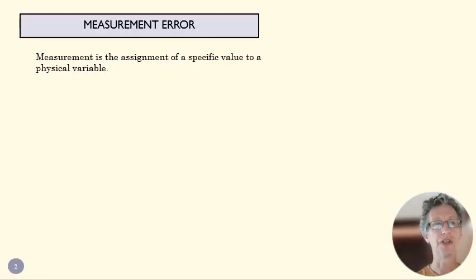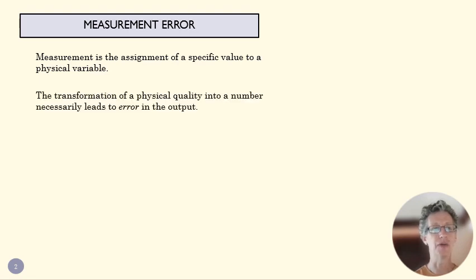So measurement, as we saw last time, is assignment of a specific value to a physical variable. When we do that, when we transform a physical quality into a number, we necessarily are going to have some error in that output.